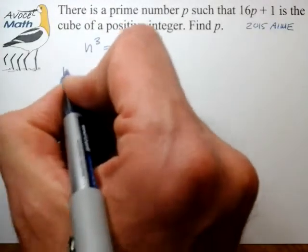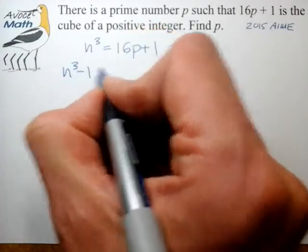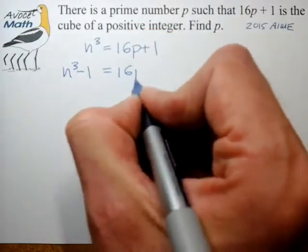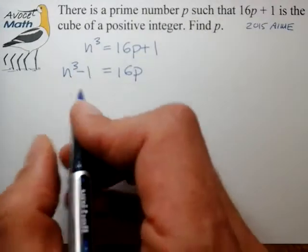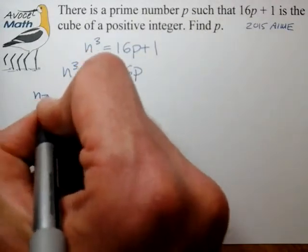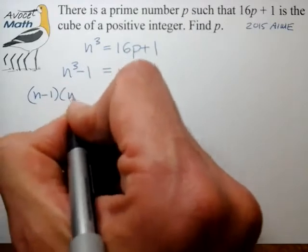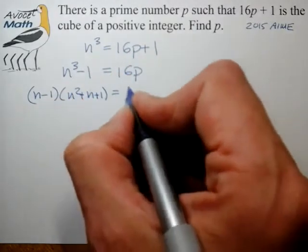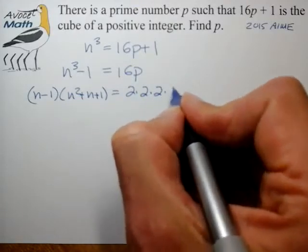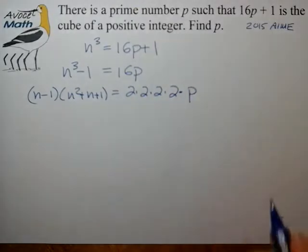We can bring the 1 over to the other side and now we have n cubed minus 1 is equal to 16p. And now we see an opportunity to factor. We have a difference between two cubes here so let's go ahead and factor that into n minus 1 times n squared plus n plus 1 equals 16p and let me just write that as a string of twos times the number p.